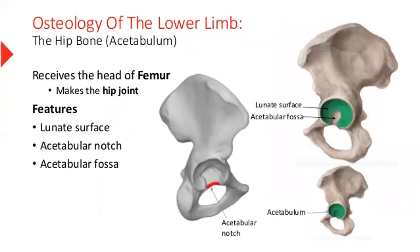Moving further, in the hip bone we have a cavity called acetabulum. The acetabulum is attached to the femur, and it is called the hip joint. In the hip bone, we have a lunate surface which is crescent-shaped, an acetabular fossa, and an acetabular notch.